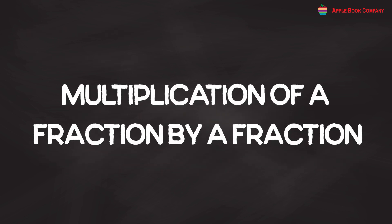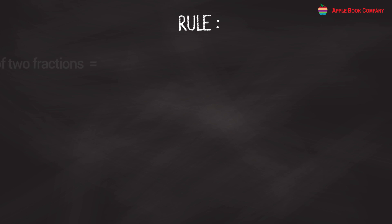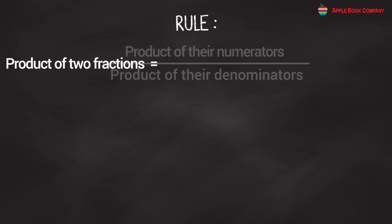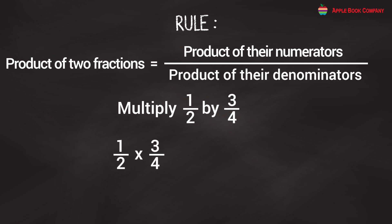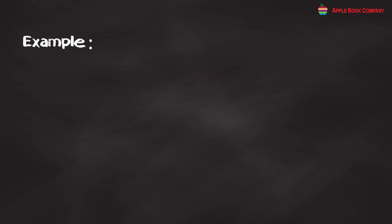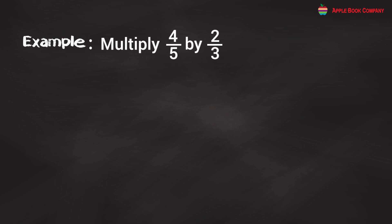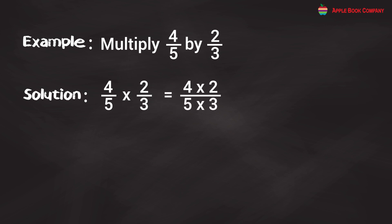Multiplication of a Fraction by a Fraction. Rule: The product of two fractions equals the product of their numerators divided by the product of their denominators. If any fraction is a mixed numeral or a whole number, convert it to an improper fraction first, then multiply as usual. Example: Multiply 4/5 by 2/3. Solution: 4/5 × 2/3 = (4 × 2)/(5 × 3) = 8/15.